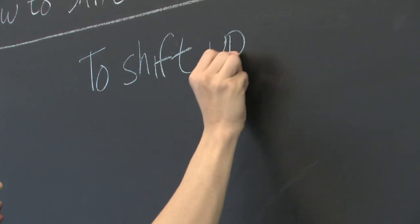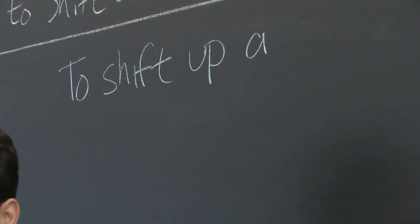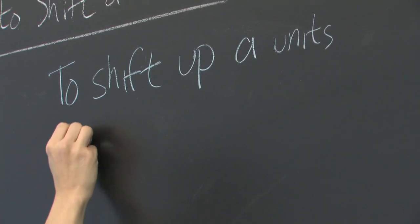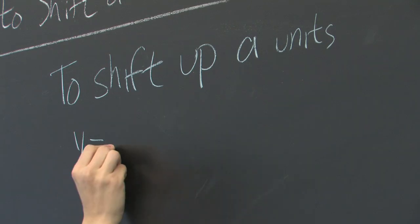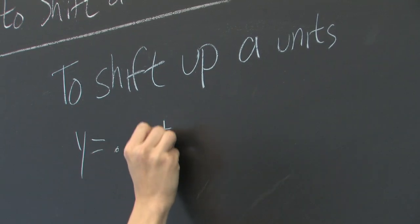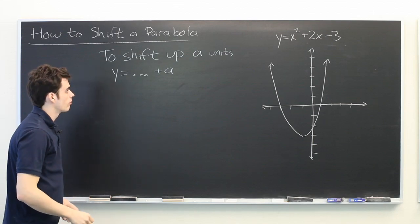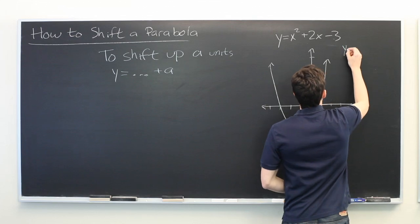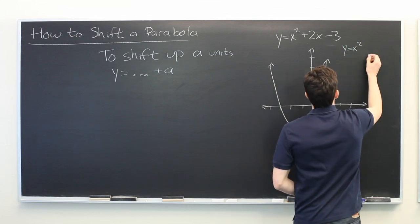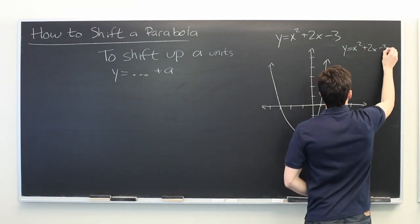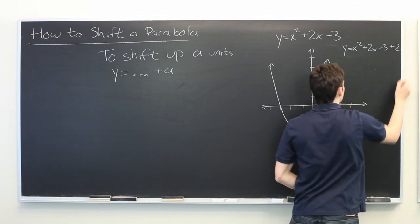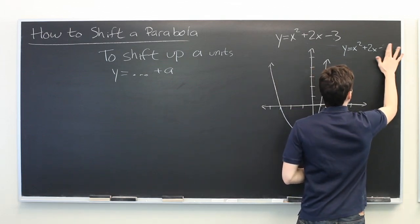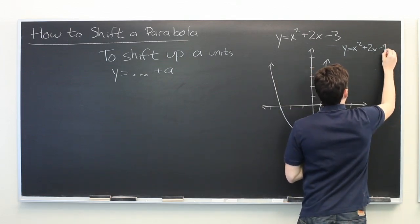To shift up by a units, where a can be any number, we'll simply rewrite our original equation and then add a to the end. So let's say that we want to shift this up by 2. We'll rewrite our original equation and then add 2. And here we can simplify this a little bit. This becomes minus 1.